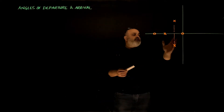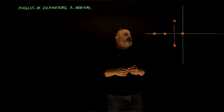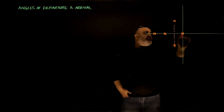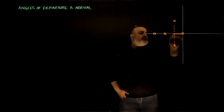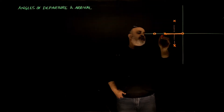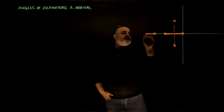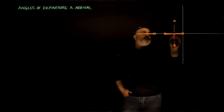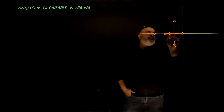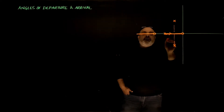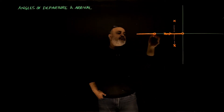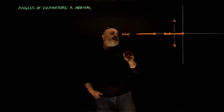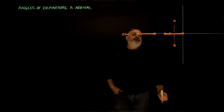Let's sketch the root locus according to the rules we derived so far. On the real axis we have nothing, and then we have a locus between the pole and zero here, nothing, and another locus that extends to infinity. This branch is complete — it starts from a pole and goes all the way to a zero. This branch extends between two zeros, so we will have a breakaway point between them.